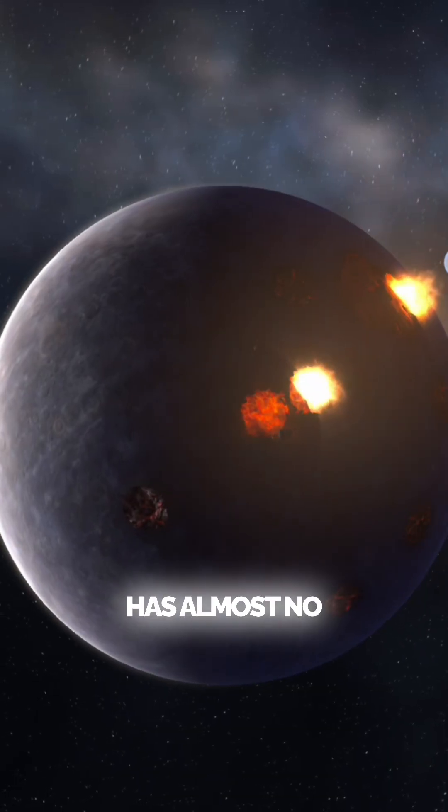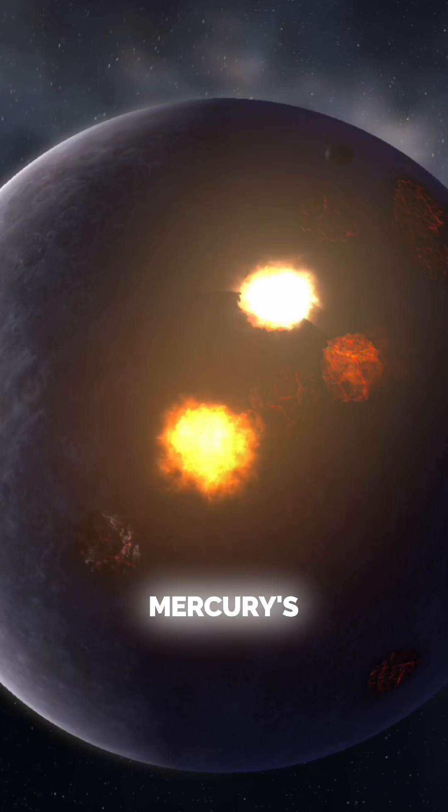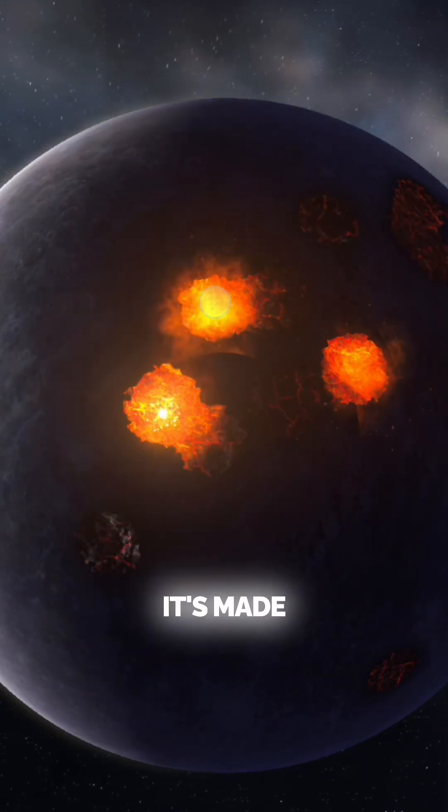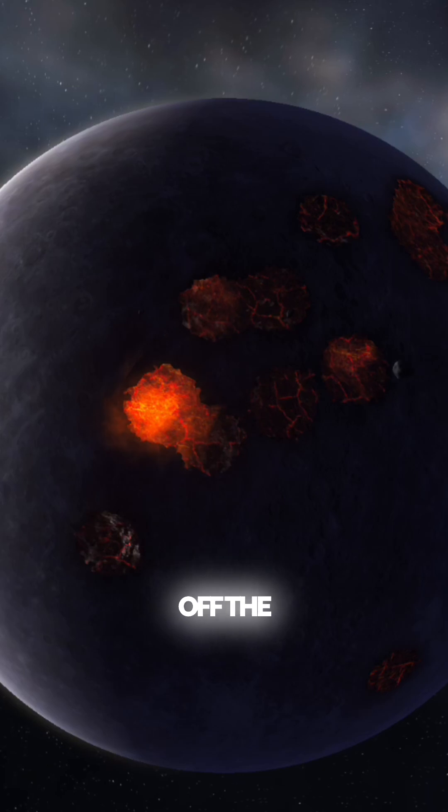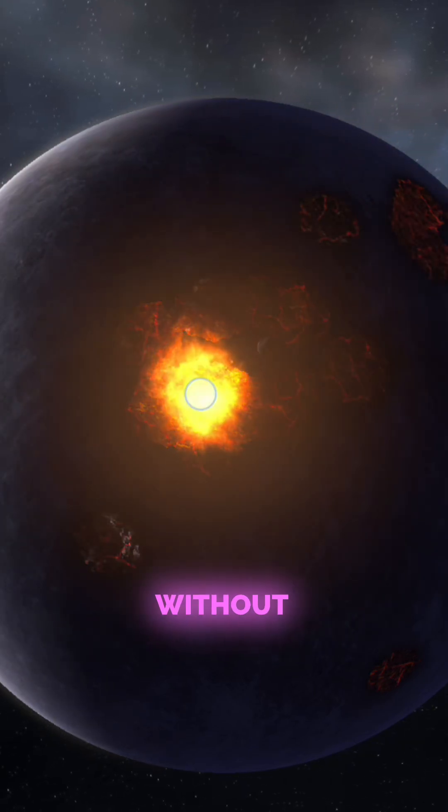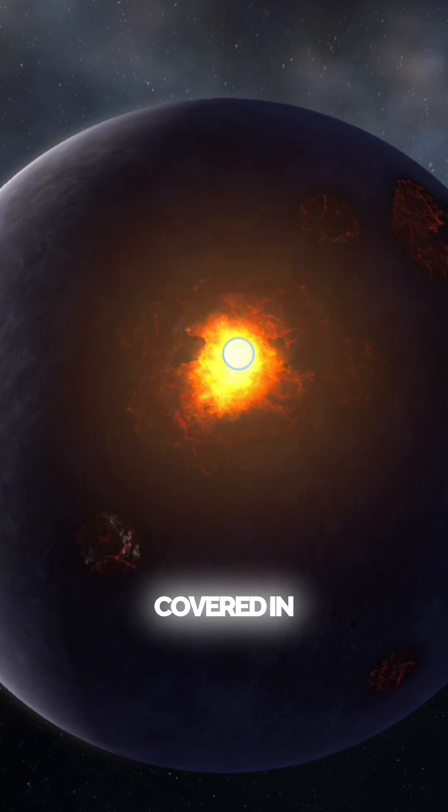5. Mercury has almost no atmosphere. Mercury's atmosphere is so thin that it's called an exosphere. It's made mostly of atoms blasted off the surface by solar winds. This means meteors hit Mercury's surface without burning up, leaving it covered in craters.